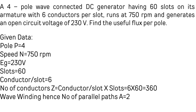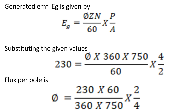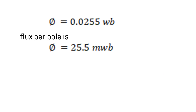Since it is a wave-connected DC generator, the number of parallel paths A equals 2. (If it were lap-connected, A equals P.) The formula for generated EMF is E = φZN/60 × P/A. Substituting values to find flux φ: φ = (230 × 60 × 2) / (360 × 750 × 4), which gives φ = 0.0255 Webers, or 25.5 milliWebers.